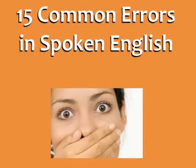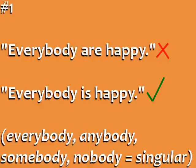15 Common Errors in Spoken English from EspressoEnglish.net. Error number one: 'Everybody are happy.' Words like everybody, somebody, anybody, and nobody are actually singular, not plural. Even though everybody refers to a lot of people, it takes the singular verb. So the correct sentence is 'Everybody is happy.'